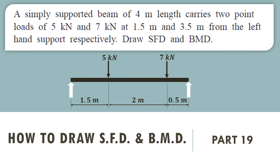In this video we will try to understand how to draw shear force and bending moment diagram in case of a simply supported beam of span 4 meter length carrying two point loads of 5 kN and 7 kN at 1.5 meter and 3.5 meter from the left hand support respectively.